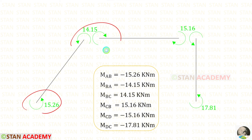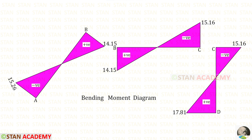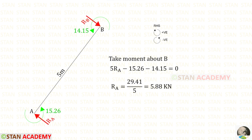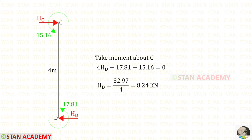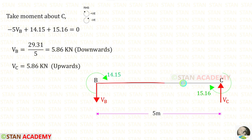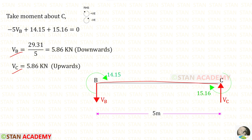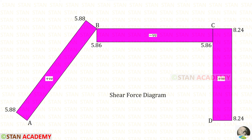Using the direction of the moments we can draw the bending moment diagram. Now let us take the inclined member AB and take moment about B to find RA. Let us take the vertical member DC and take moment about C to find HD. Now let us take member BC; by taking moment about C we can find VB. In BC there is no load, so VB and VC will be the same — VB acting downwards and VC acting upwards. Here you can see the shear force diagram. Thank you for watching this video.